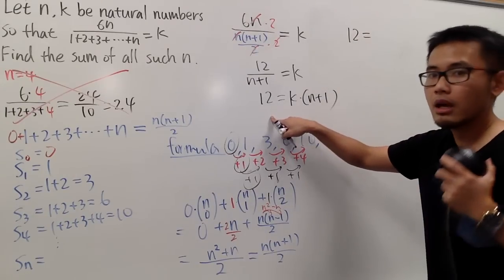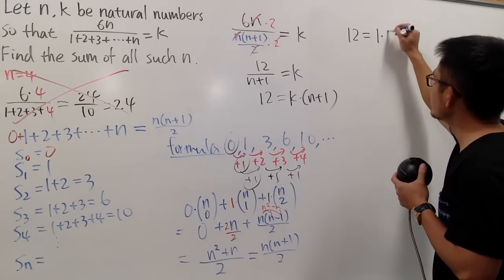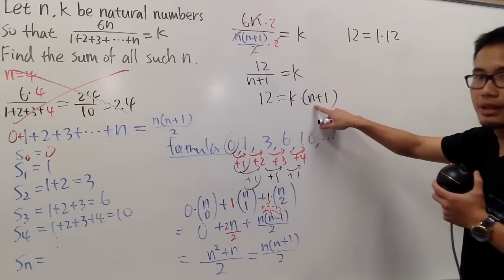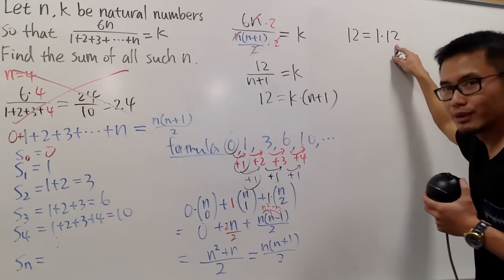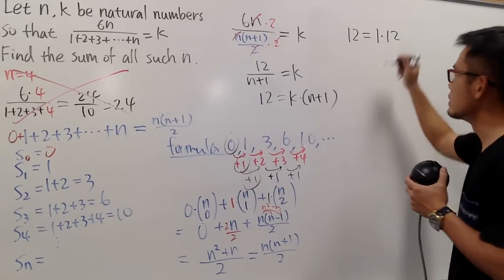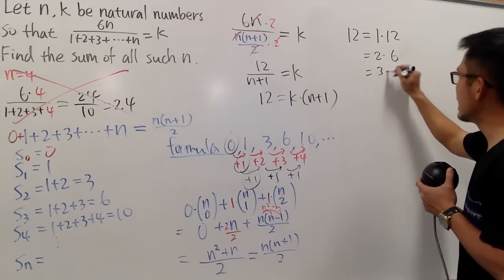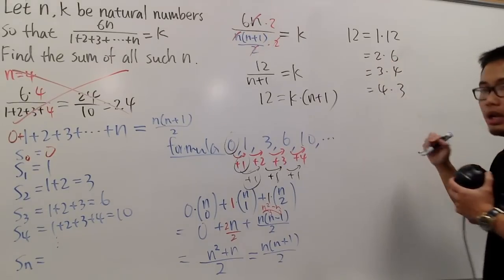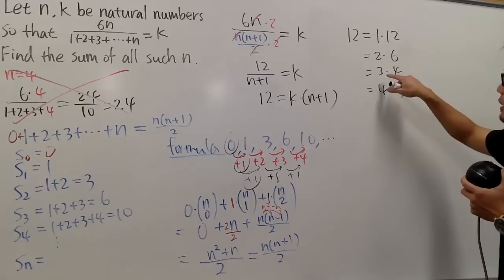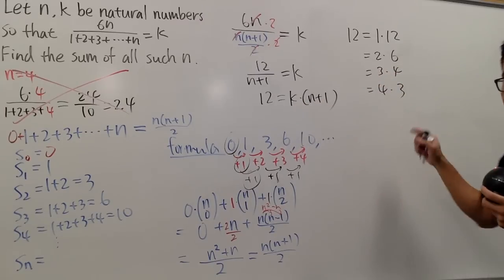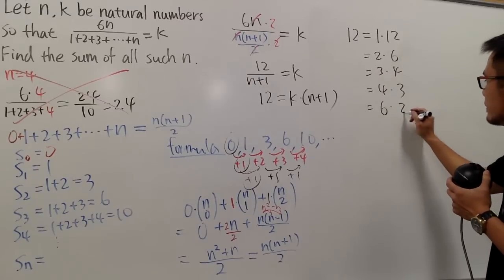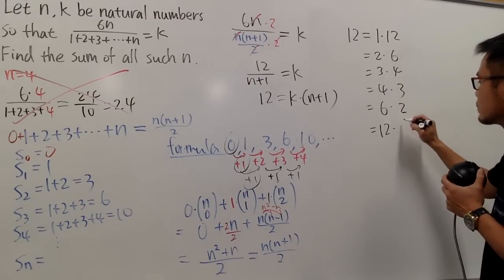First choice is, we can say 12 is equal to 1 times 12. And based on this, you can take k to be 1, when n is equal to, well, we want to have n plus 1 to end up with 12, so n shall be 11. But anyway, let me just list out all the factors of 12 first. So the next one could be 2 times 6, and the next one is 3 times 4, and then the next one is 4 times 3. And the reason I put this down is because I'm saying, here, k is 4, while this right here was saying k was 3. So I do want to change the order a little bit for you guys. And the next one is going to be 6 times 2, pretty much refers to the order. And lastly, we have 12 times 1.